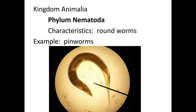Pinworms are microscopic nematodes that live in the digestive system. Their reproductive strategy is unique and creepy: when a female is gravid with eggs, she crawls out of the person's anus and glues her eggs around it. When the person wakes up their butt is itchy, they scratch and get eggs under their fingernails, then reinfest themselves by touching their mouth or nose. Pinworms are very common in daycares and elementary schools because kids don't have very good hygiene. If your kid is scratching their butt a lot, take them to the doctor.